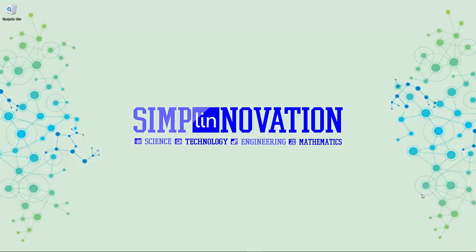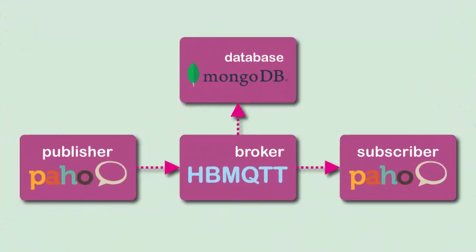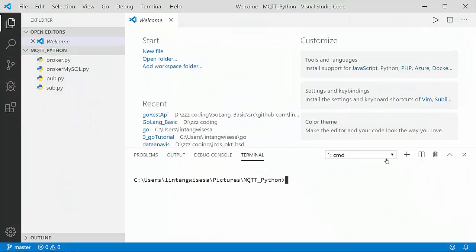Hi everyone, welcome back to SimplyNovation. In this video I will continue my previous tutorial about Python-based MQTT broker and its client. Now I'll connect to a MongoDB database. In the previous video we successfully connected the MQTT broker to save messages from the publisher into a SQLite database, so now I'll use MongoDB instead.